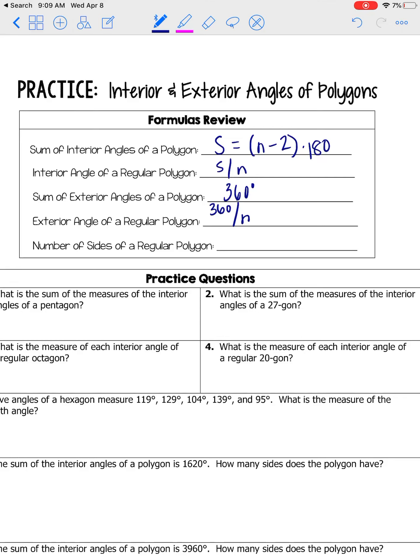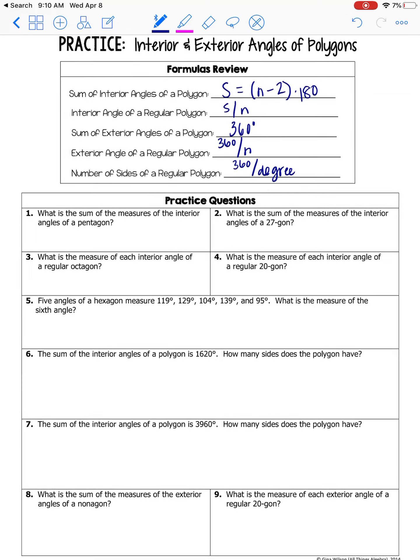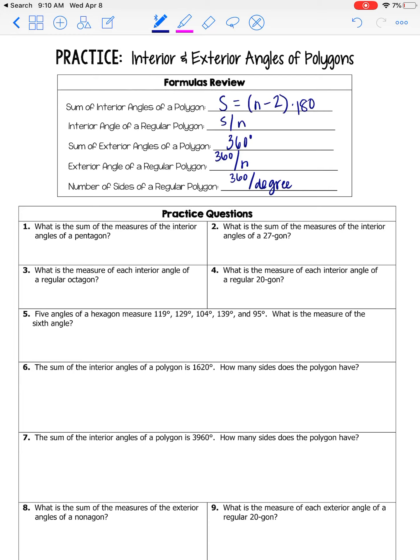When you're asked to find the number of sides that a regular polygon has, you're just going to do 360 over the degree. So they'll tell you what each degree is. And you're going to do 360 over that, and that's going to give you n. And the reason that we do 360 over the degree rather than working with S is because if you don't know n, you can't find S. And they're not going to give you S, but you know that 360 is universal. It applies to every polygon.